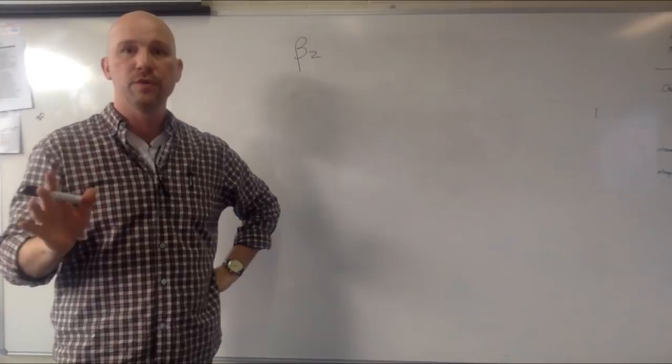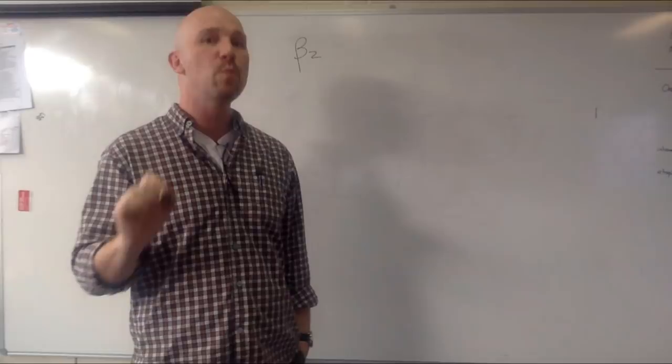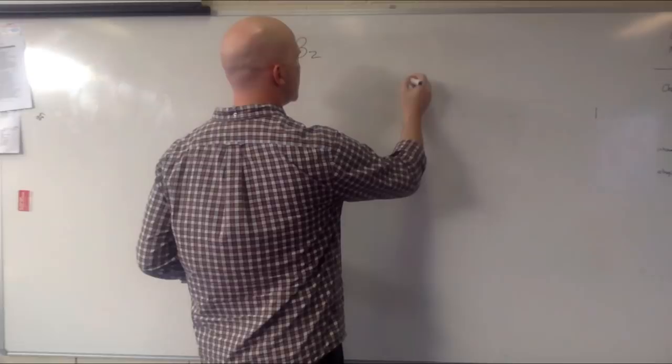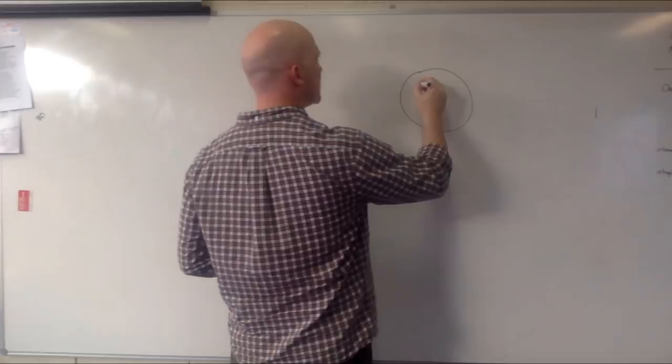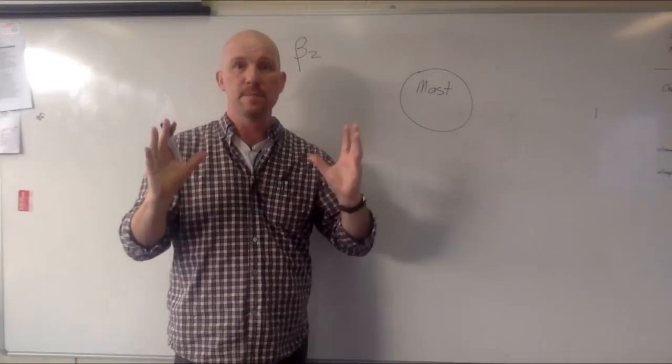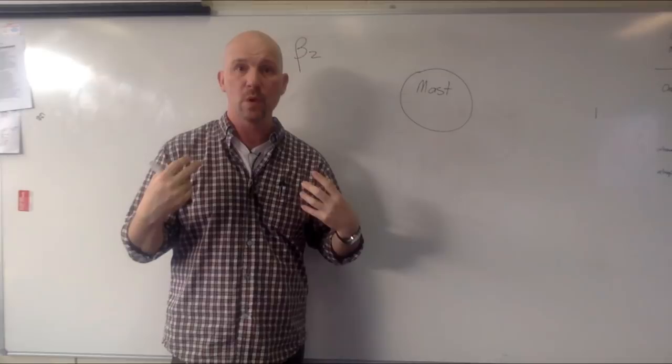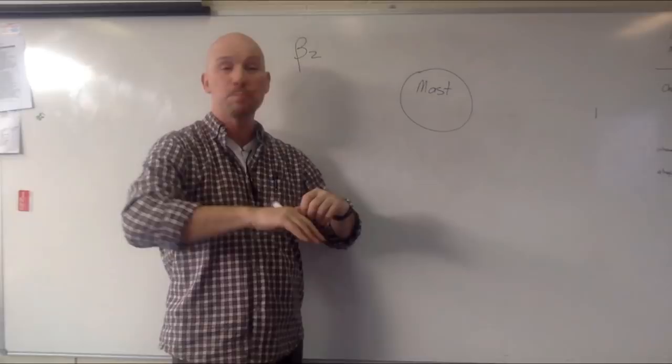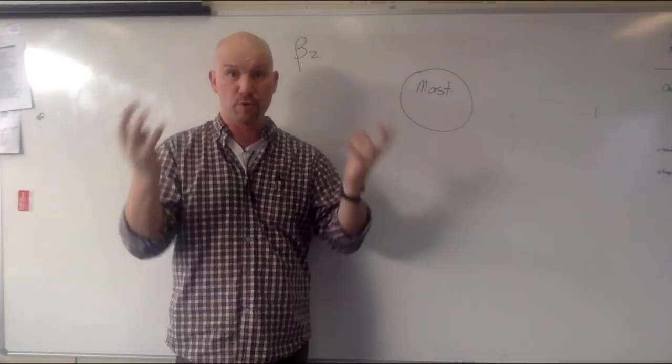Let's talk about one more thing that beta-2 does. We've talked about how there are beta-2 receptors in the lungs. There's beta-2 receptors somewhere else in the body, and those beta-2 receptors are also very important. There's a type of cell inside our body, throughout our body, and they're called mast cells. And mast cells are a part of our immune system. I like to think of mast cells as landmines that are distributed throughout our body.